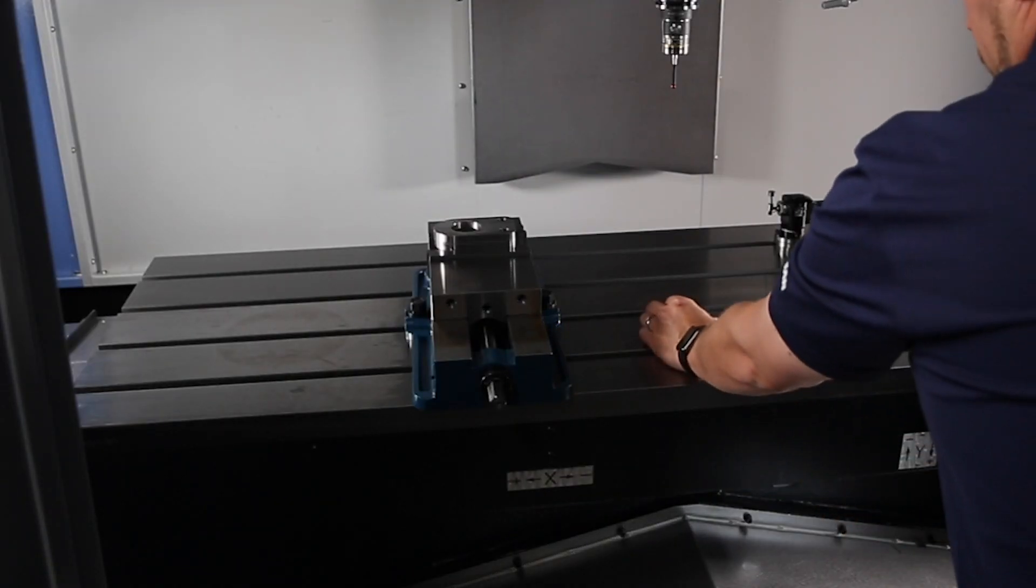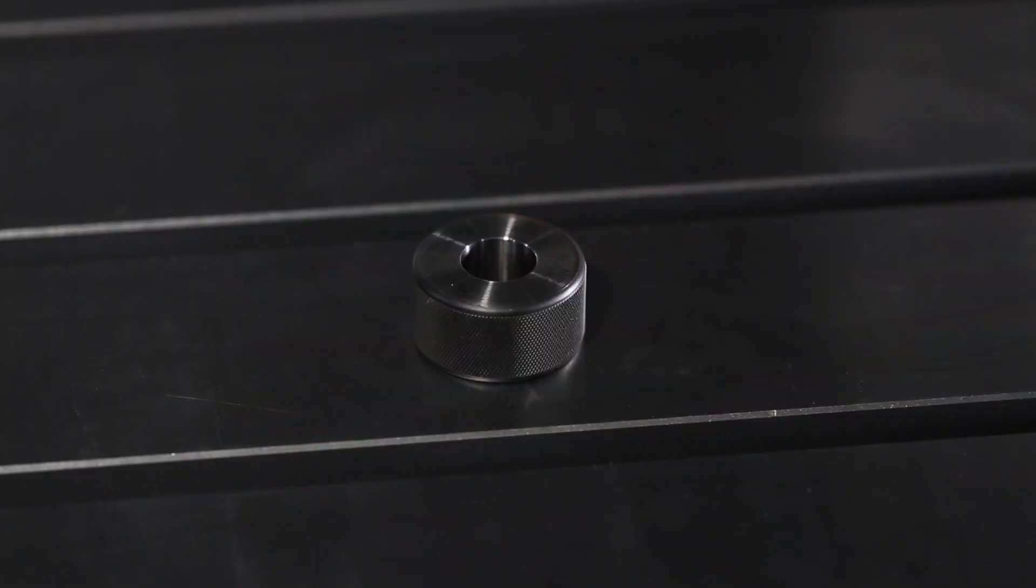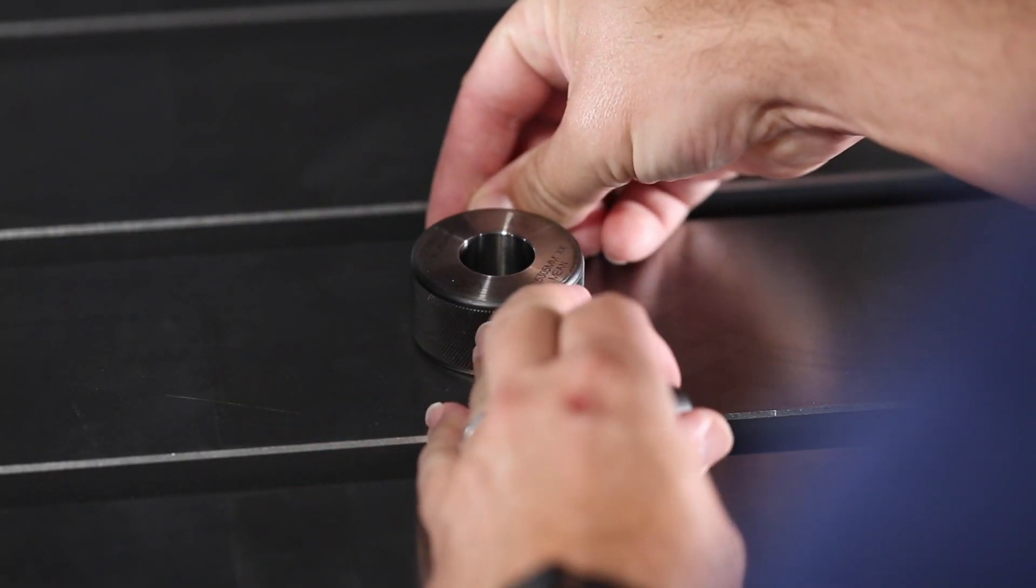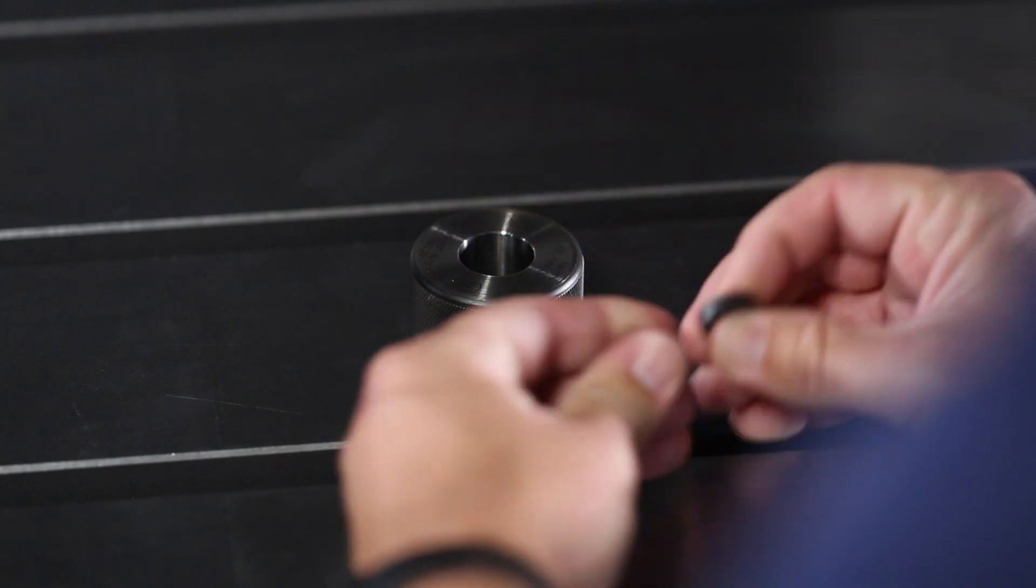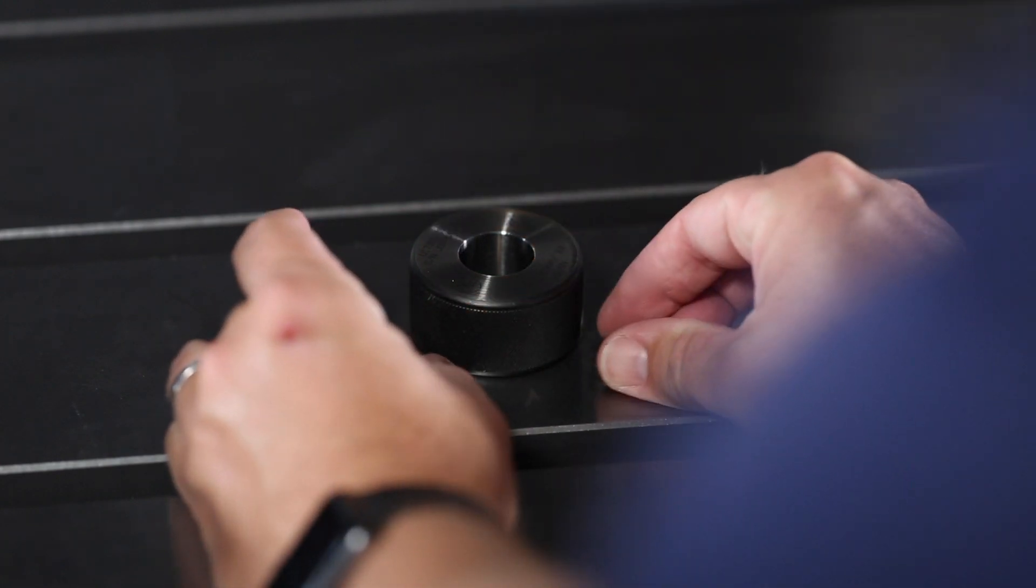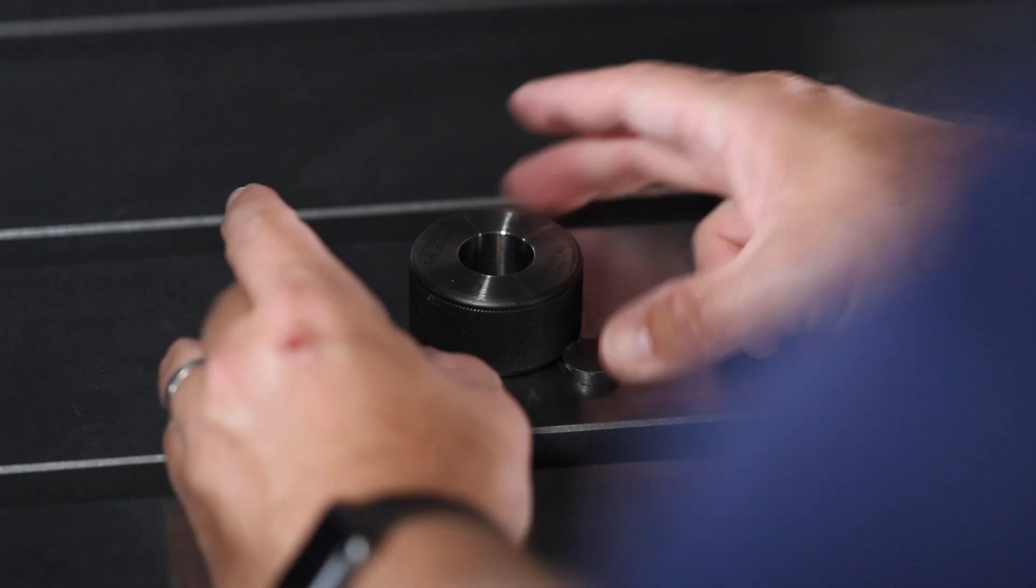Alright, I want you to mount the ring gauge in the machine flat to the table. You can do it with magnets or mount it in a vise with a v-block. The most important thing here is that it is flat to a known surface.